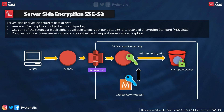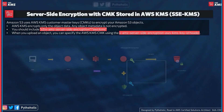When you use SSE-S3, each object is encrypted with a unique key. For extra security, S3 encrypts the key itself with a master key that it regularly rotates — meaning it changes periodically. It uses AES-256 (Advanced Encryption Standard, 256-bit) to encrypt your data. You must include the x-amz-server-side-encryption header to request server-side encryption, but you can also enable it in the console.